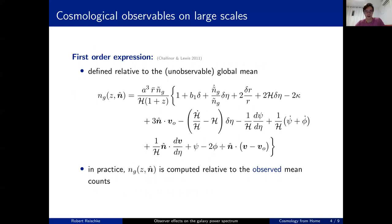For Challinor and Lewis, I will give you the expression here. What you see first is the usual density contrast delta. This is the total number of galaxies, that's why you have the one, the mean or the global mean of the Friedmann universe. You have the bias which relates the density contrast here, which is in synchronous gauge, to the galaxy overdensity.